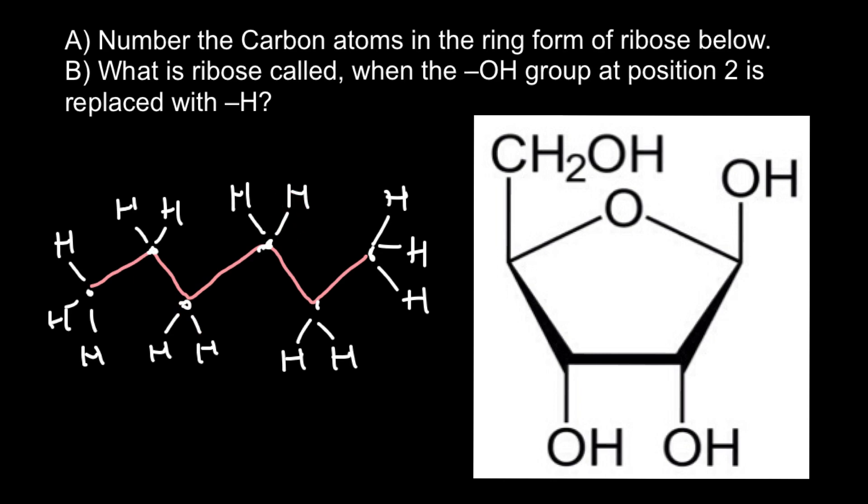And because we have six carbons here, this molecule would be hexane. So let's count number of carbons in our ribose.